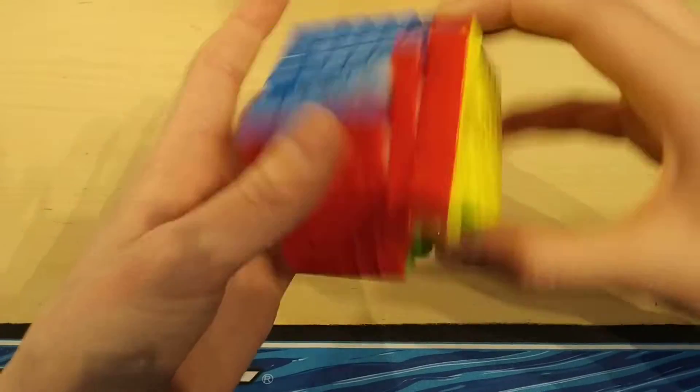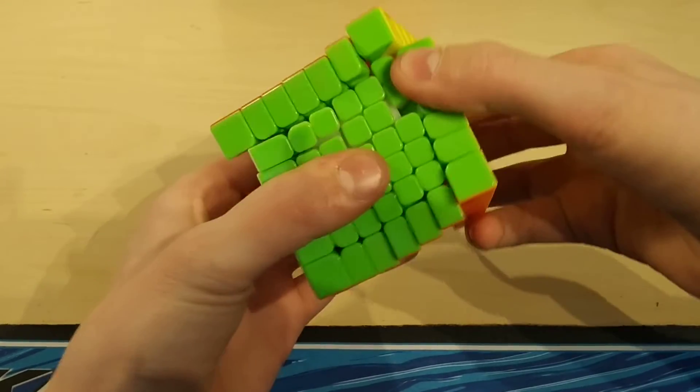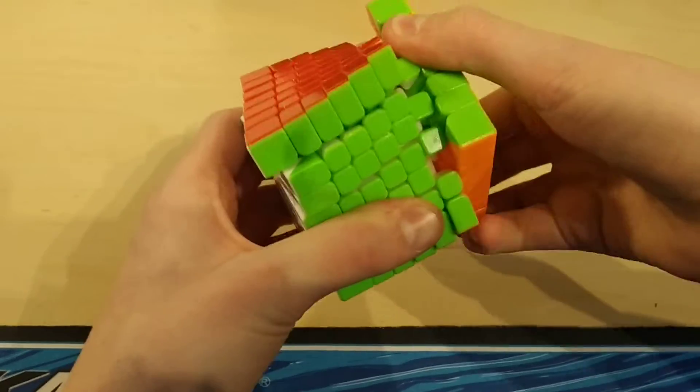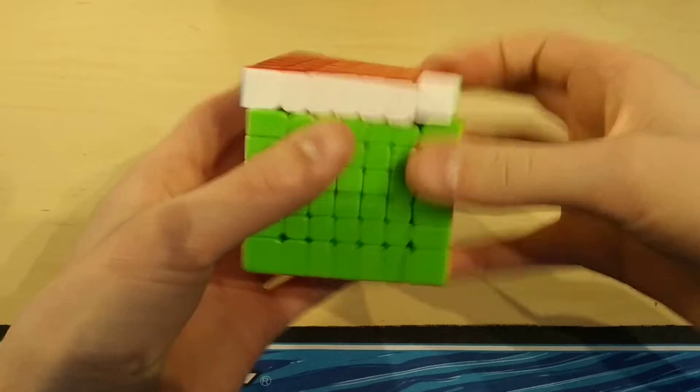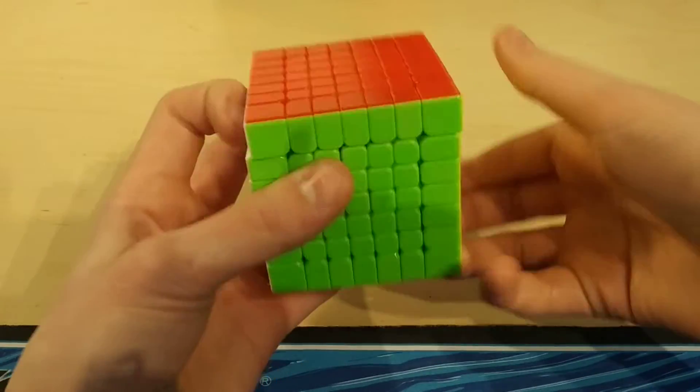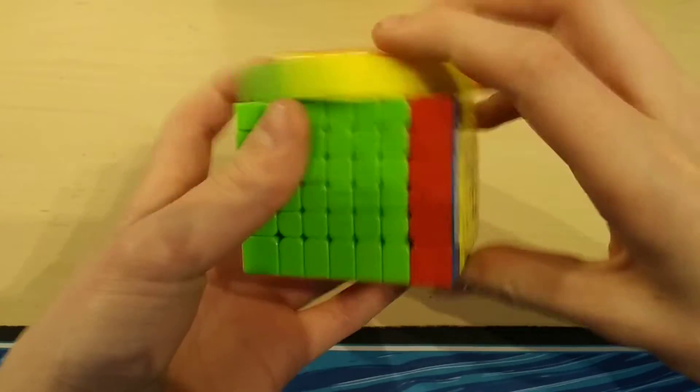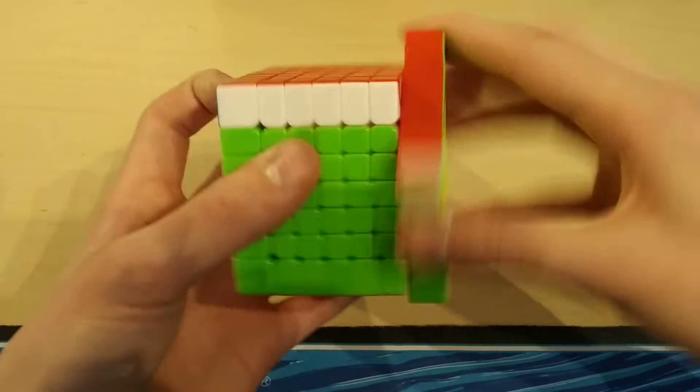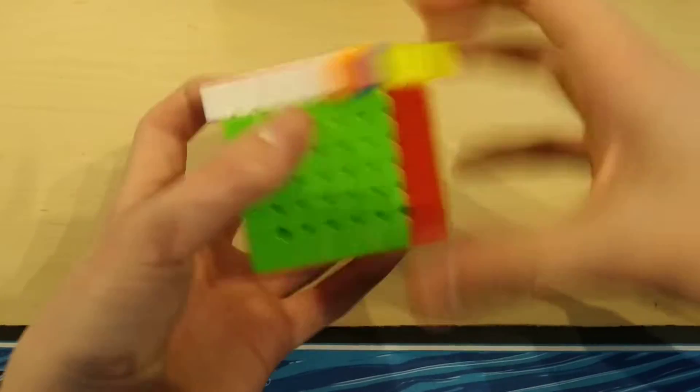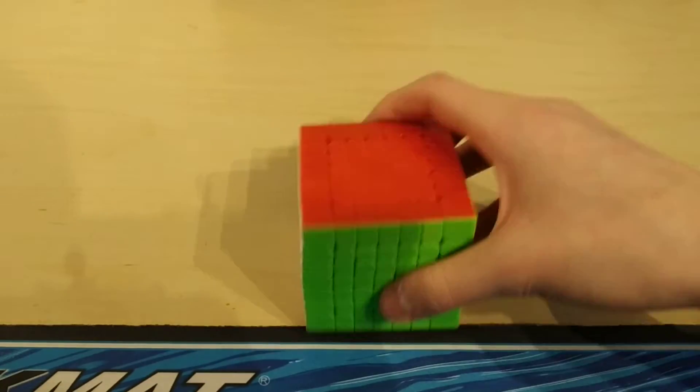As you can see here it does get these annoying lockups a little bit, but they seem pretty easy to fix I guess. It doesn't seem like a big problem. This will most likely end up being my main. My current main is a Cosmic Wuji that is quite slow because I don't really practice 7x7 that much anymore. Hopefully this can get me a little bit more back into it. Most likely going to be my main but it is catching a little bit, but hopefully that'll go away with breaking in.